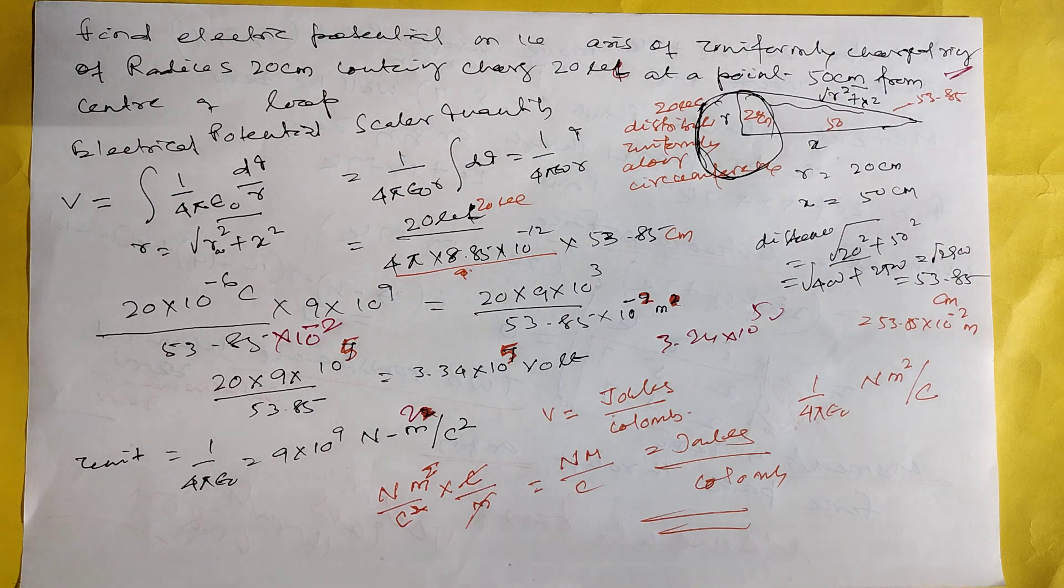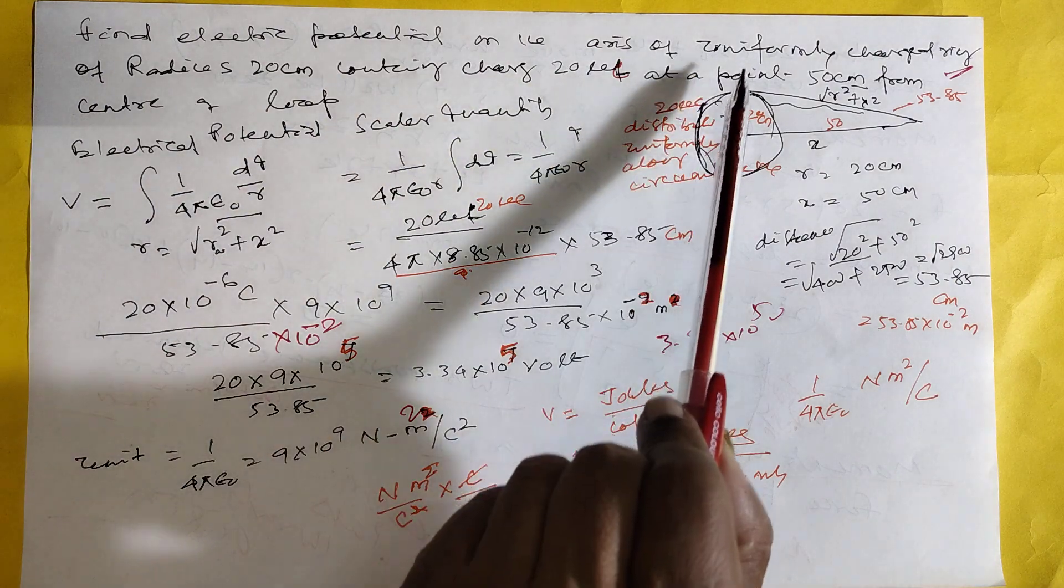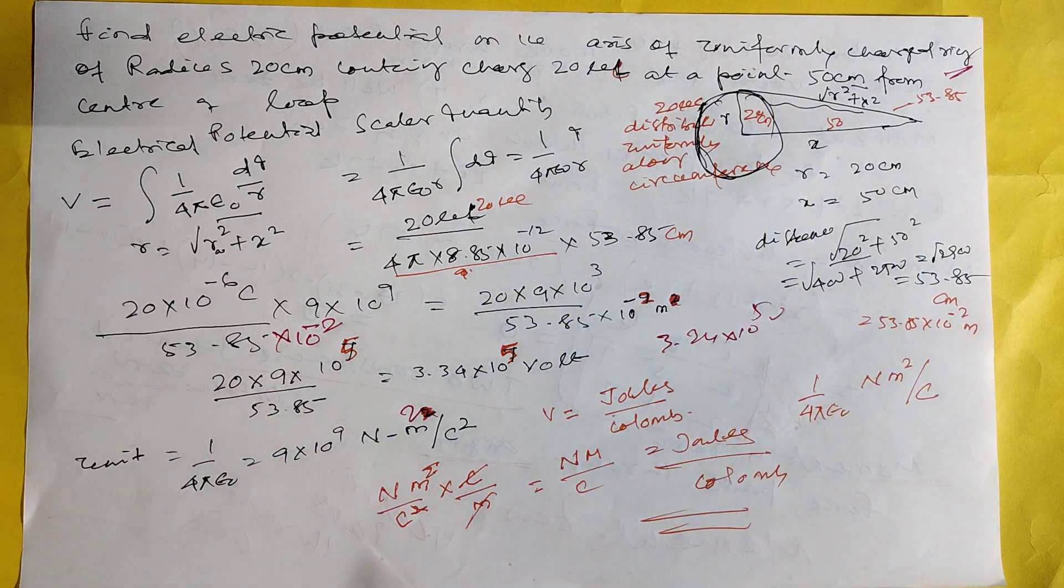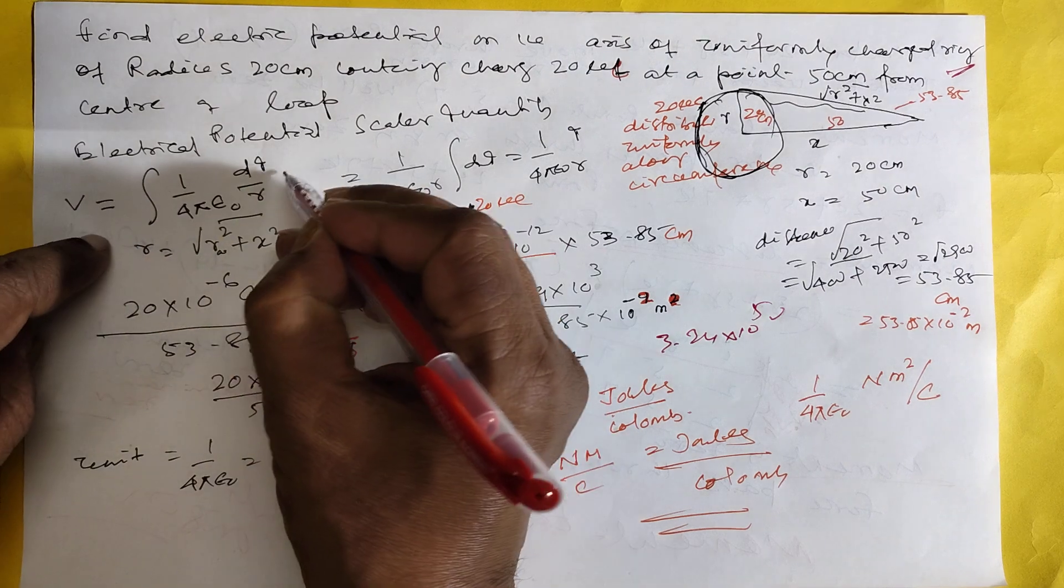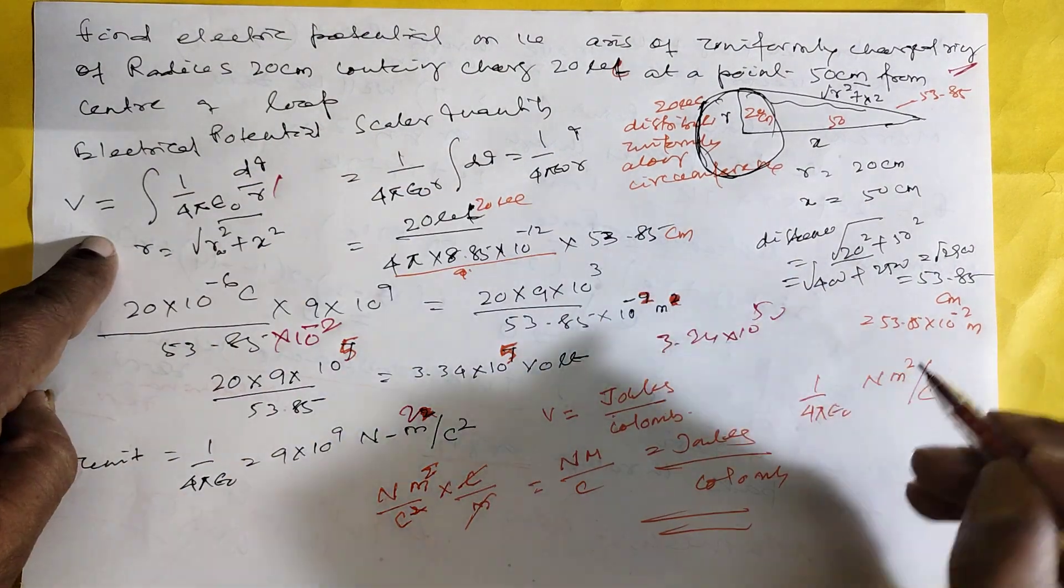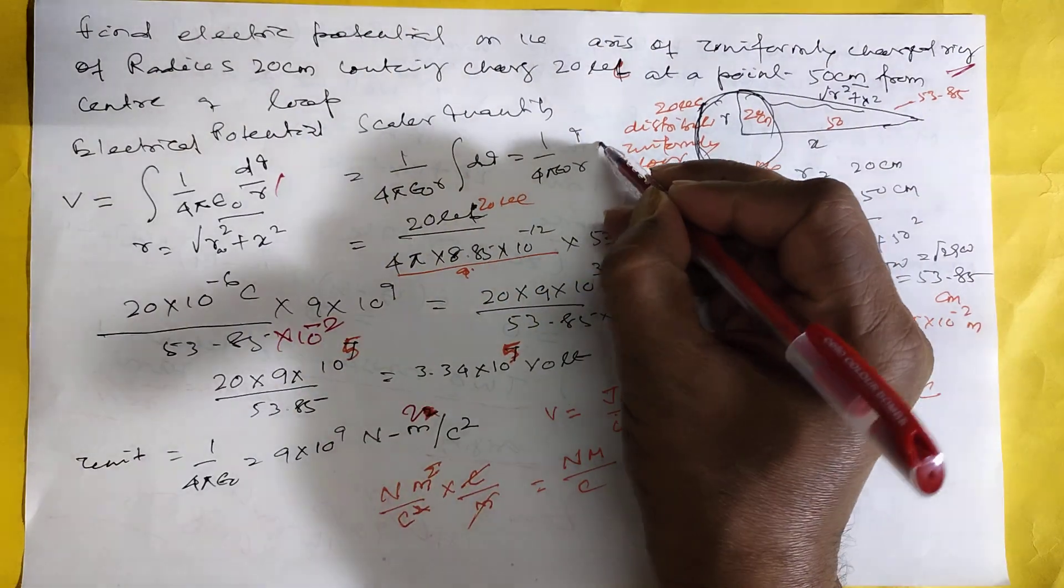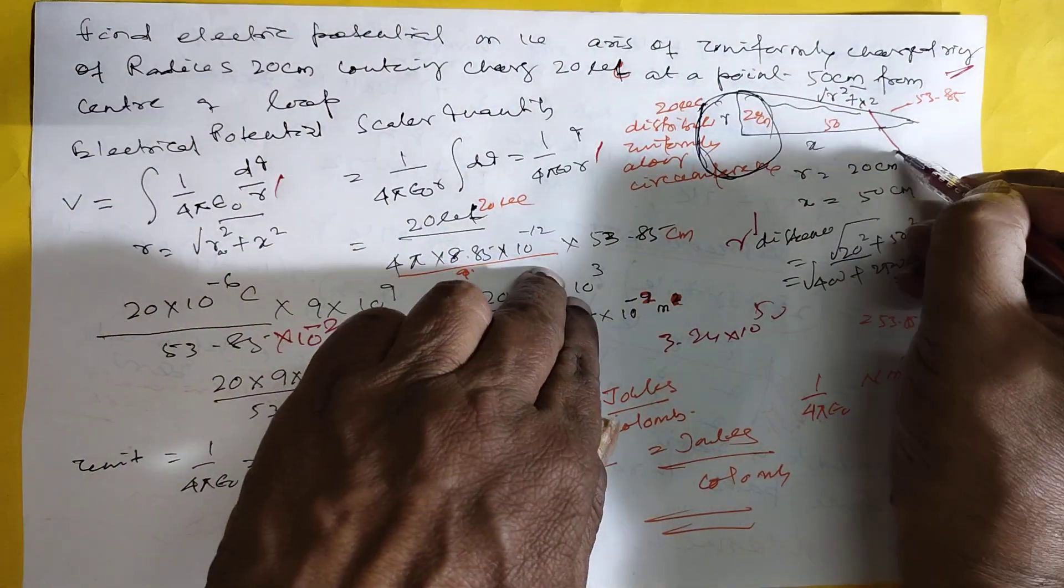So only one thing: this is a ring, not a disc. Distance here means distance. You have to put this square plus this square. This r means the distance. Better put it r dash, because otherwise it will be confusing to you.